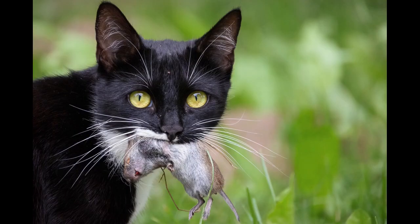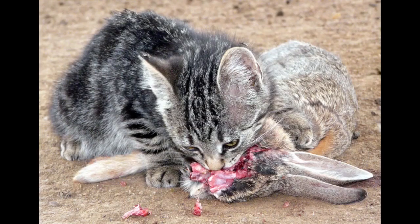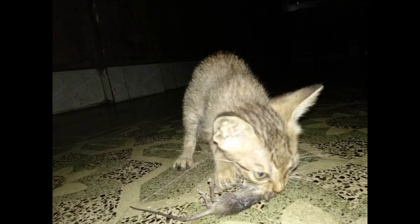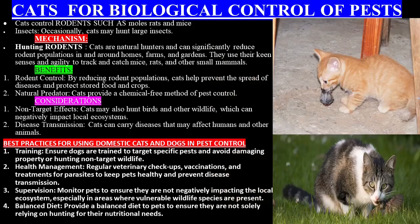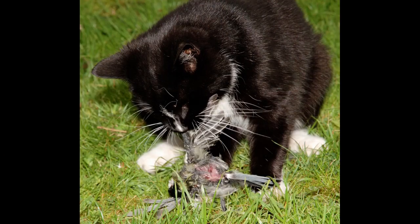Cats control insects and rodents such as rats and mice. Benefits: by reducing rodent populations, cats help prevent the spread of diseases and protect stored food and crops. Cats provide a chemical-free method of pest control. Consideration: cats may also hunt birds and other wildlife, which can negatively impact local ecosystems.